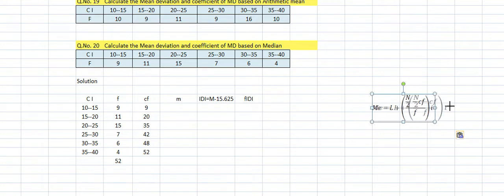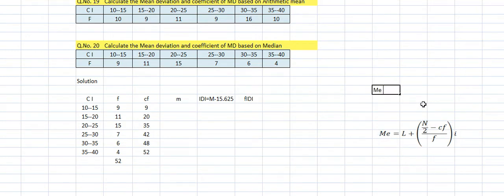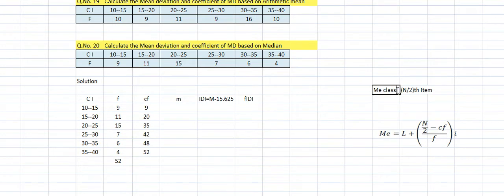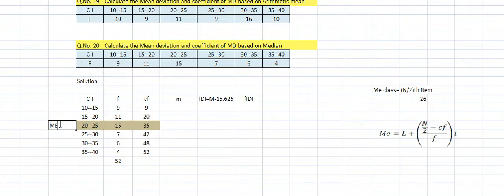To find the median class, use N/2 = 52/2 = 26. Look in the CF column — 20 is less than 26 and 35 is greater, so the median class is the one corresponding to CF = 35. Apply the median formula: Median = L + [(N/2 – preceding CF) / f] × i.